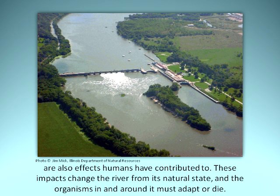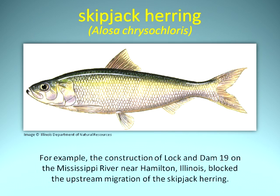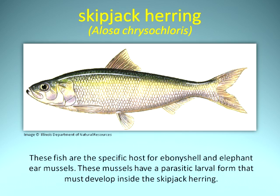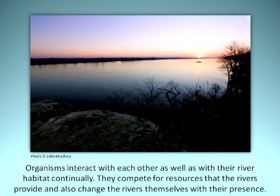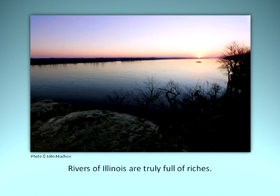These impacts change the river from its natural state and the organisms in and around it must adapt or die. For example, the construction of Lock and Dam 19 on the Mississippi River near Hamilton, Illinois, blocked the upstream migration of the skipjack herring. These fish are the specific host for ebony shell and elephant ear mussels. These mussels have a parasitic larval form that must develop inside the skipjack herring. Since skipjack herrings are no longer upstream of Lock and Dam 19, these mussel species are also no longer found upstream from Lock and Dam 19. Organisms interact with each other as well as with their river habitat continually. They compete for resources that the rivers provide and also change the rivers themselves with their presence. Rivers of Illinois are truly full of riches.